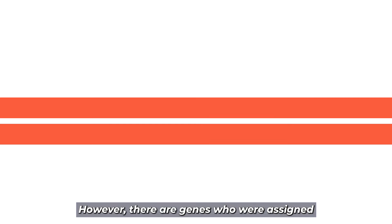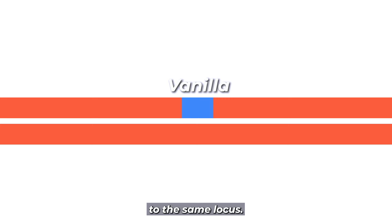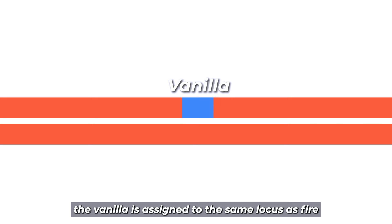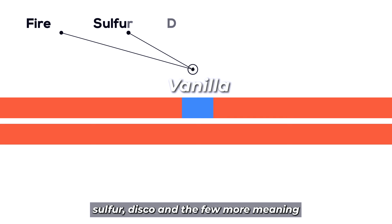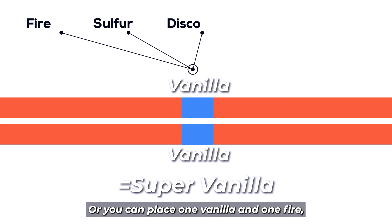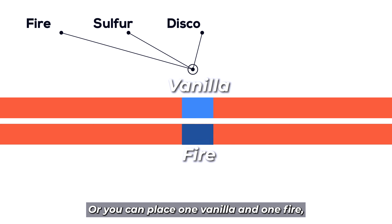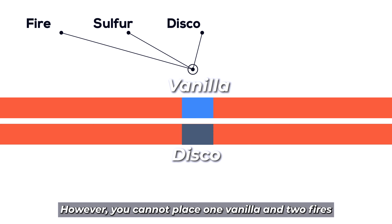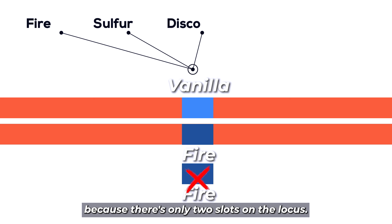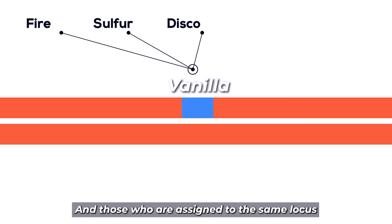However, there are genes assigned to the same locus. In this particular scenario, Vanilla is assigned to the same locus as Fire, Sulfur, Disco, and a few more. Meaning you can place two copies of Vanilla, which is called a Super Vanilla, or you can place one Vanilla and one Fire, and so on. However, you cannot place one Vanilla and two Fires, because there are only two slots on the locus. Those assigned to the same locus are what we call allelic to each other.